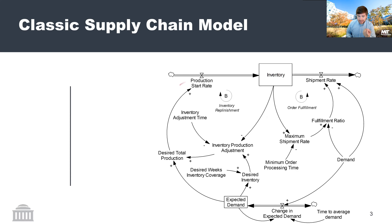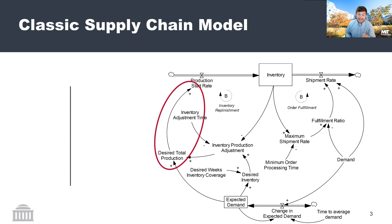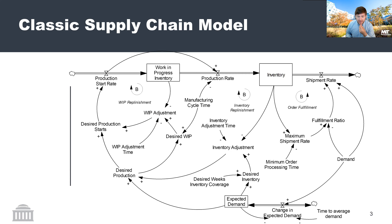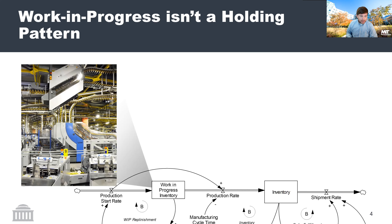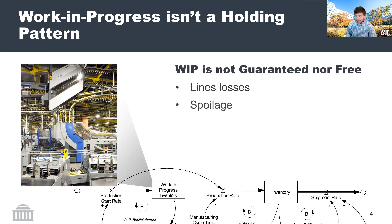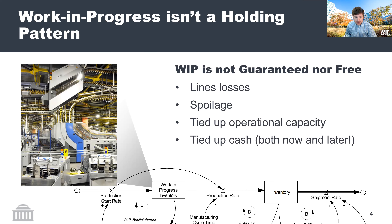Your production start rate itself is not necessarily perfectly tied to what you want it to be. You don't just cause these units under all circumstances to instantly come into existence. There's some concept of work in progress — you have to make these units and they take time to make before they are in a finished good state and ultimately available for shipping. Work in progress itself is not a static holding tank. It's not guaranteed, nor is it free. Production start rate does not necessarily directly translate into production rate. There might be line losses, there might be spoilage in the case of foodstuffs. Additionally, having something in a work in progress state is costly — it ties up operational capacity and ties up cash that could be spent for some other purpose.